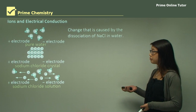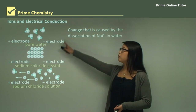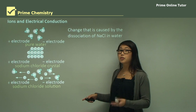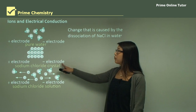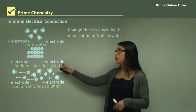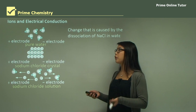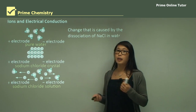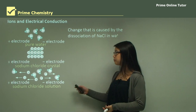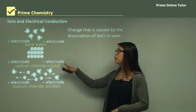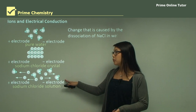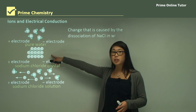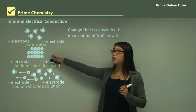With pure water and electrodes, nothing happens — no charge movement. With electrodes on a sodium chloride crystal alone, we also see no charge movement and the light won't turn on. But when we put sodium chloride into the water and let it dissociate and dissolve, it forms ions: positively charged sodium ions and negatively charged chloride ions.